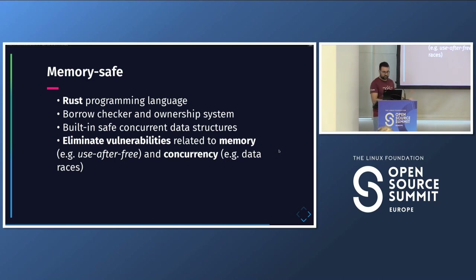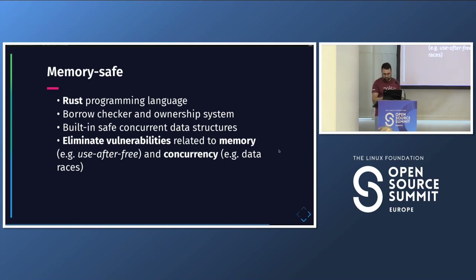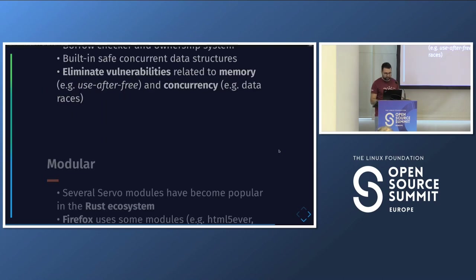Servo is memory safe. Using Rust, which has features like the borrow checker and ownership system, as well as built-in safe concurrent data structures, helps eliminate vulnerabilities related to memory — like use-after-free — and concurrency issues like data races. Thanks to the language, you're creating safer applications, and Servo is one of those.